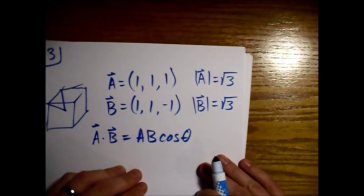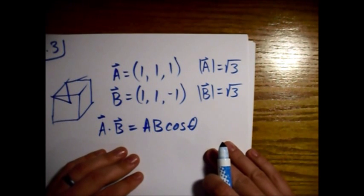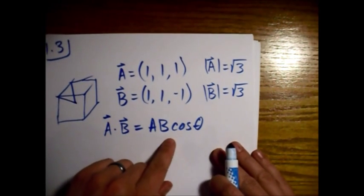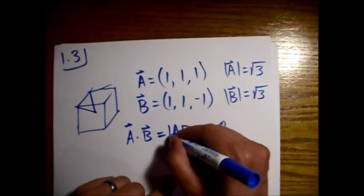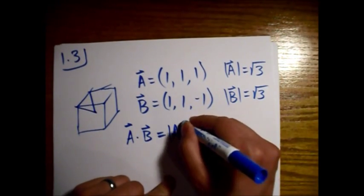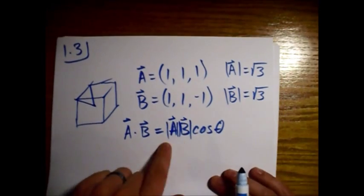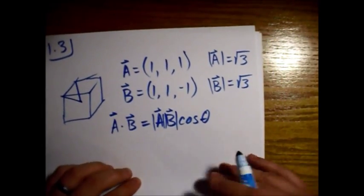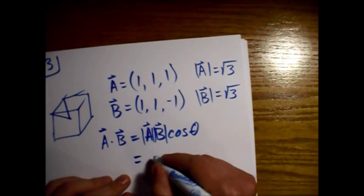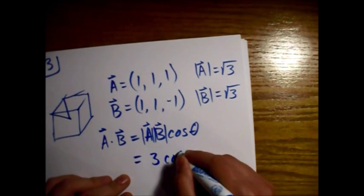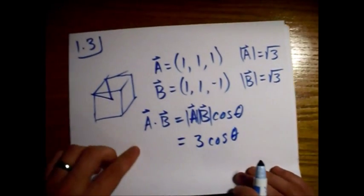All right, now we know this here and this here, and I can write these the same way. These are just the two magnitudes. All right, so this is equal to, so square root of three times square root of three is just three cosine of theta.